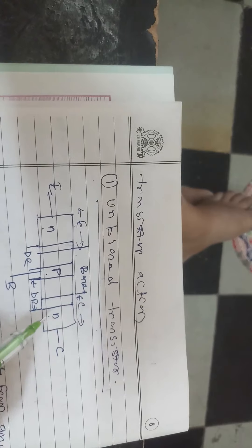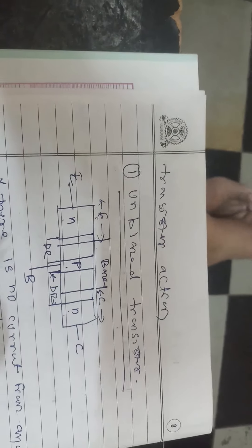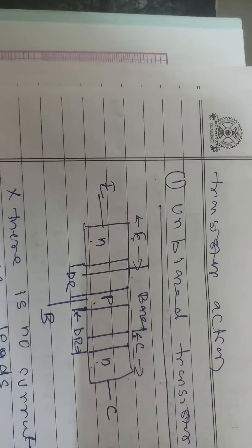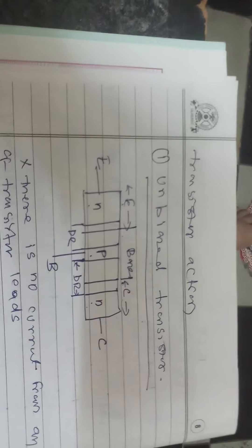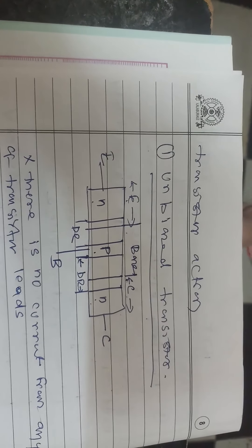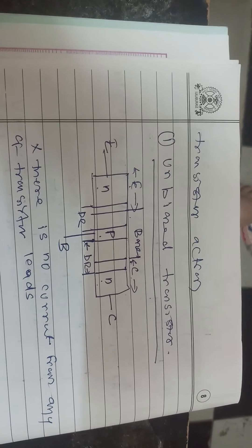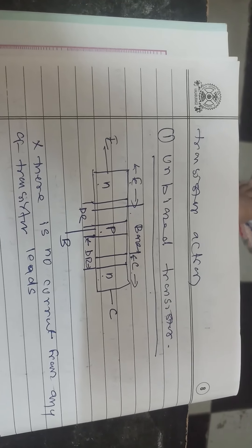There are two junctions formed: one junction between emitter and base, called the EB junction, and one junction between the collector and base, called the CB junction. Similar to a diode junction, junctions are formed here as well. The transistor is essentially two diodes connected back to back. In the unbiased transistor, there is no external connection to the transistor.